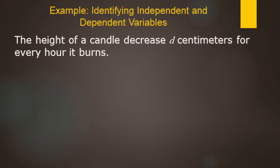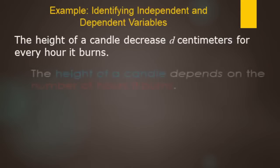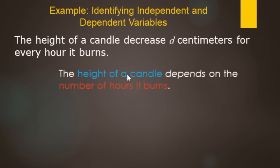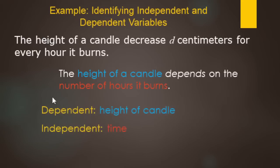Next example: the height of a candle decreases for every hour it burns. We're measuring the height of the candle, which depends on how long ago you lit it — the number of hours or minutes it has burned. So the dependent variable is height of the candle in inches or centimeters, and the independent variable is time — how long it has been burning.